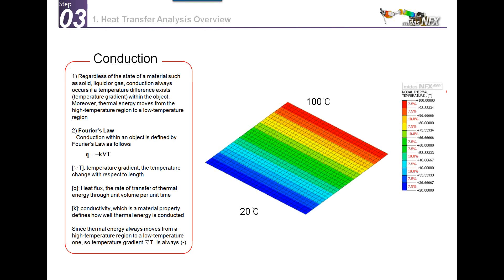Let's talk in more detail about each type. For conduction, think about a plate with 20°C on one side and 100°C on the other. Heat propagates through Fourier's law: Q equals minus K multiplied by the temperature gradient, where K is the conductivity — a material property. The speed at which heat propagates depends on your material. The minus sign is because temperature always flows from the high temperature region to the low temperature region.